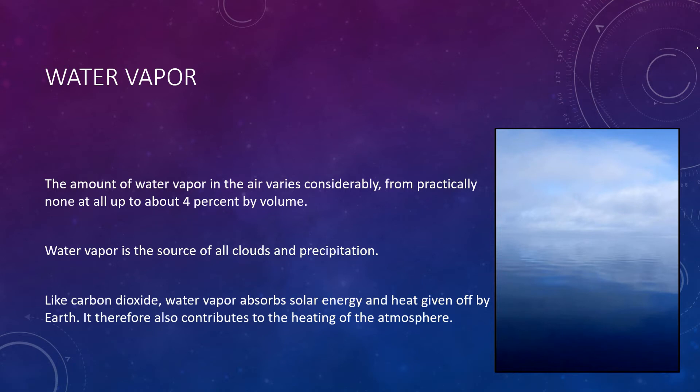Air also includes many gases and particles whose quantities vary significantly in different times and places. Important examples of these gases include water vapor, dust particles, and ozone. Although usually present in small percentages, they can have significant effects on weather and climate. You are probably familiar with the term humidity from watching weather reports on television. Humidity is a reference to water vapor in the air. The amount of water vapor in the air varies considerably from practically none all the way up to about 4% in volume. Why is such a small fraction of the atmosphere so significant? The fact that water vapor is the source of all clouds and precipitation would be enough to explain its importance.